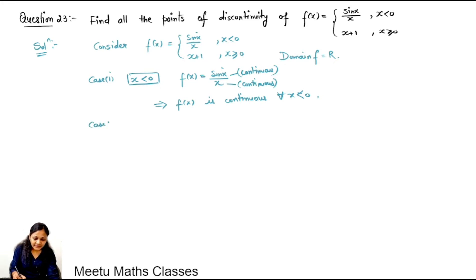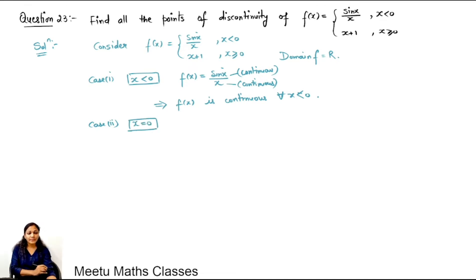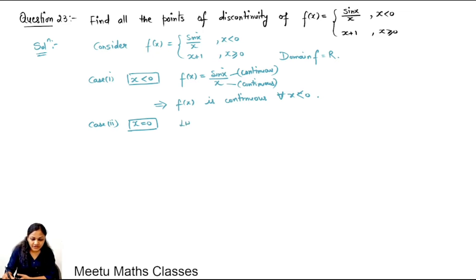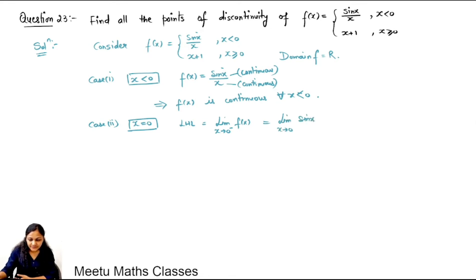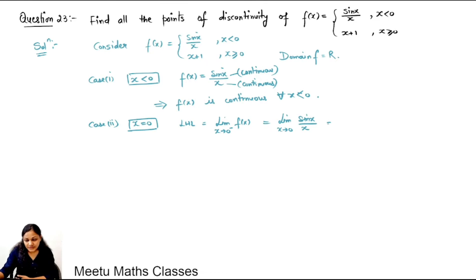In case 2, we are going to check continuity at x equals 0. Since the function definition is different to the left and right of 0, we find the left hand limit first. The limiting value of the function as x tends to 0 minus: to the left of 0 the function is sin x upon x, and the limiting value of sin x upon x as x tends to 0 is equal to 1.